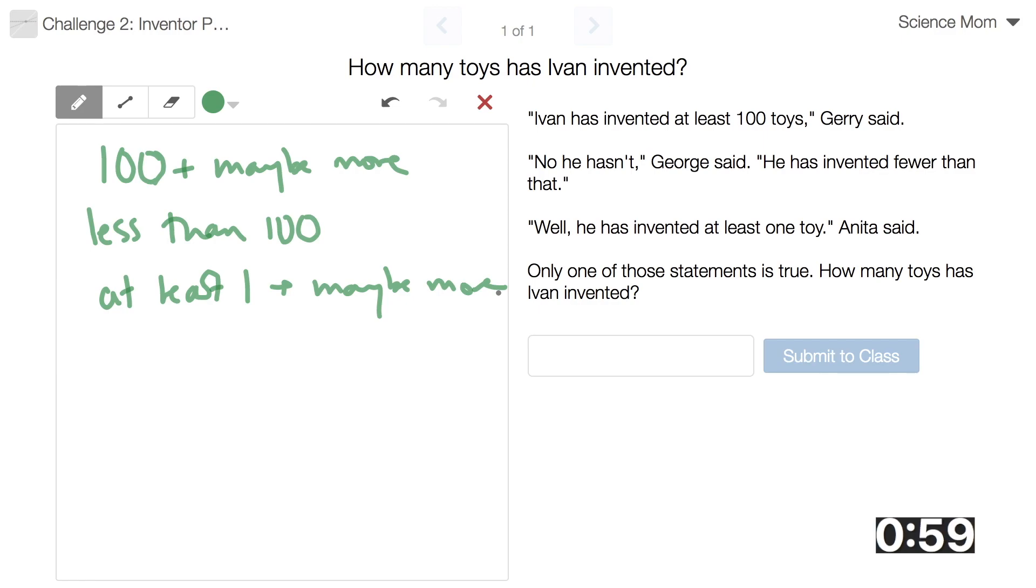So I think one of those statements is true, two are false, and I think my more useful bit of information is that two of them are false. So let's start out and just try saying what if at least one and maybe more is false. That means that 100 and maybe more is also false, and less than is true.